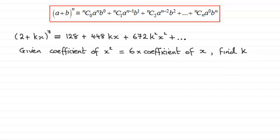To do this, all we need to do is say that the coefficient of x², well that's 672k², so we got that 672k² must be equal to 6 times the coefficient of x, which is 448k.